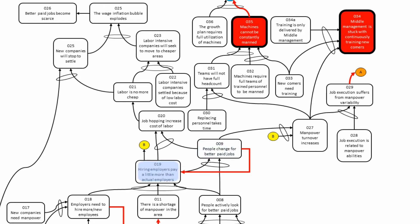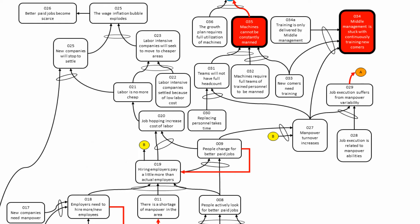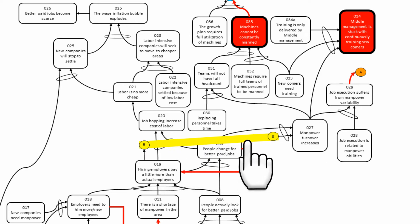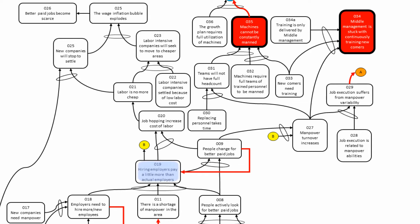If people change for better paid jobs and hiring employers pay a little more than actual employers, then manpower turnover increases. From entity 19 we have this yellow marker which is marked B, and you have the other one at the entry of entity 27 — these are connecting points to avoid overcrowding the graph with crossing arrows. So B connects to B. On entity 19 we have: hiring employers pay a little more than actual employers, and people change for better paid jobs, then entity 27: manpower turnover increases.